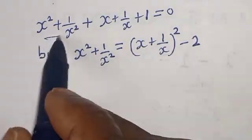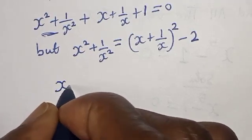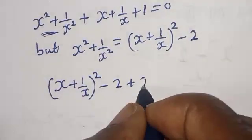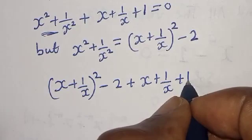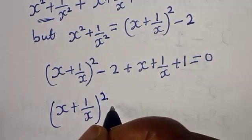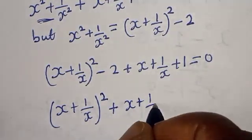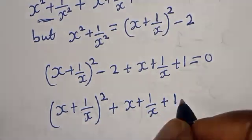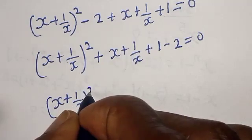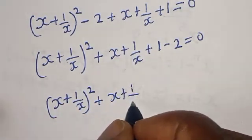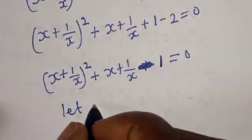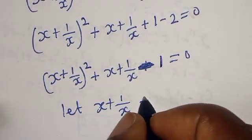Substituting back: (x plus 1 over x) squared minus 2 plus (x plus 1 over x) plus 1 equals 0. Let's rearrange: (x plus 1 over x) squared plus (x plus 1 over x) minus 1 equals 0. Now let y equal x plus 1 over x.